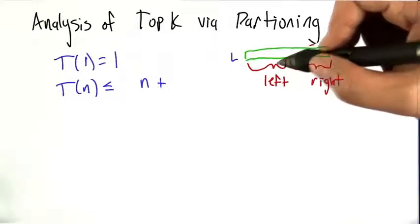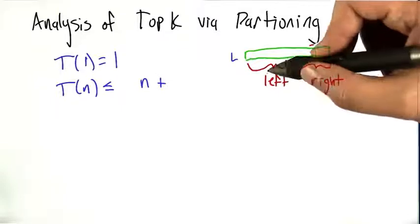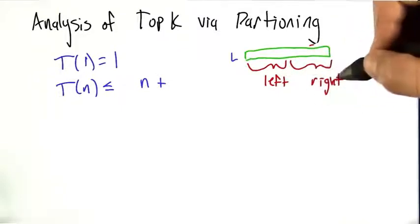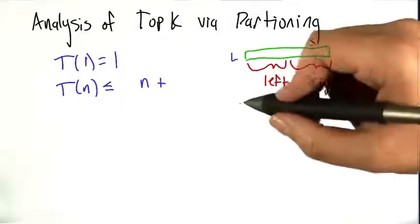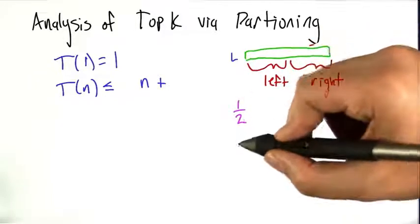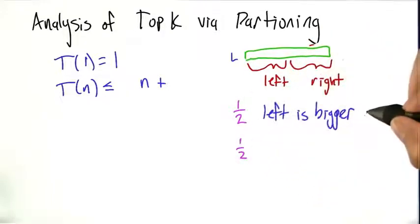Well, it's just as likely for the left to be bigger as it is for the right to be bigger, and vice versa. So really, you can imagine with justification that with probability of half, the left side is bigger, and in particular, bigger than size n over 2.